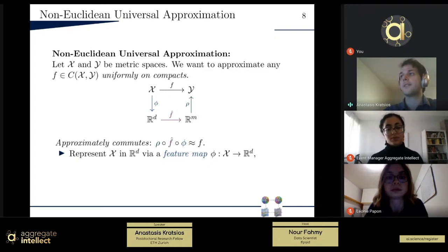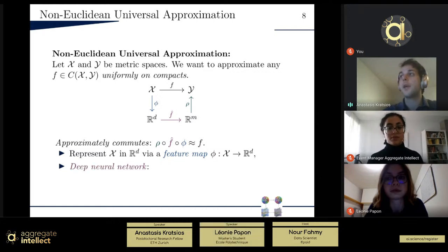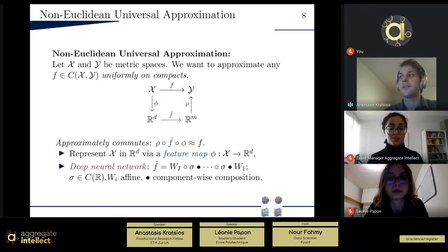What first we want to do is we want to represent X inside Euclidean space by what is often called the feature map. So this is a continuous transformation and maps into Euclidean space. Then once we're there, we can then apply our familiar tools. So for example, in this talk, it's a deep neural network. So I wrote it schematically like this.